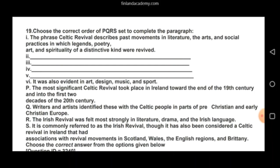Next we place P: 'The most significant Celtic Revival took place in Ireland towards the end of the 19th century and into the first two decades of the 20th century.' We put P here because of increasing nationalism taking place in Ireland during the 19th century and beginning of the 20th century, which was later also followed by the construction of the Abbey Theatre in Ireland.